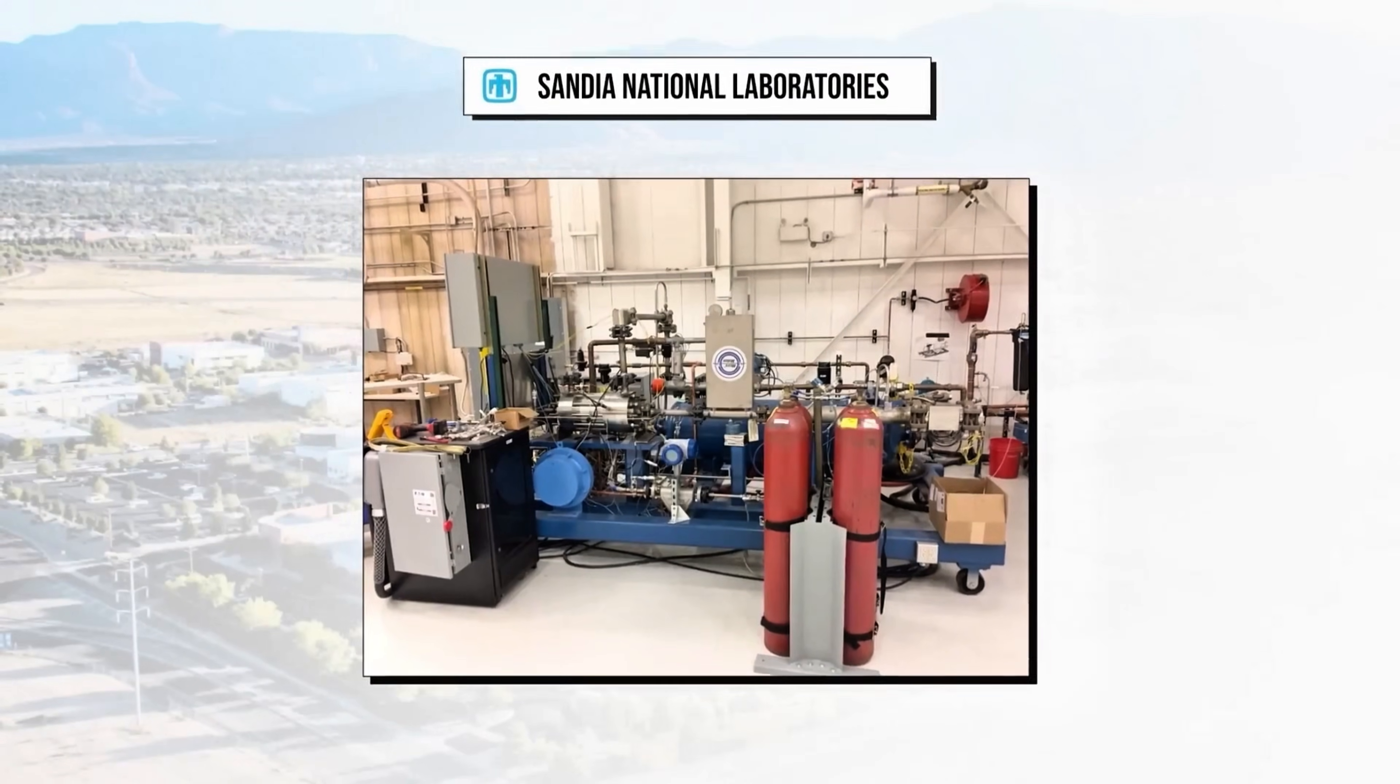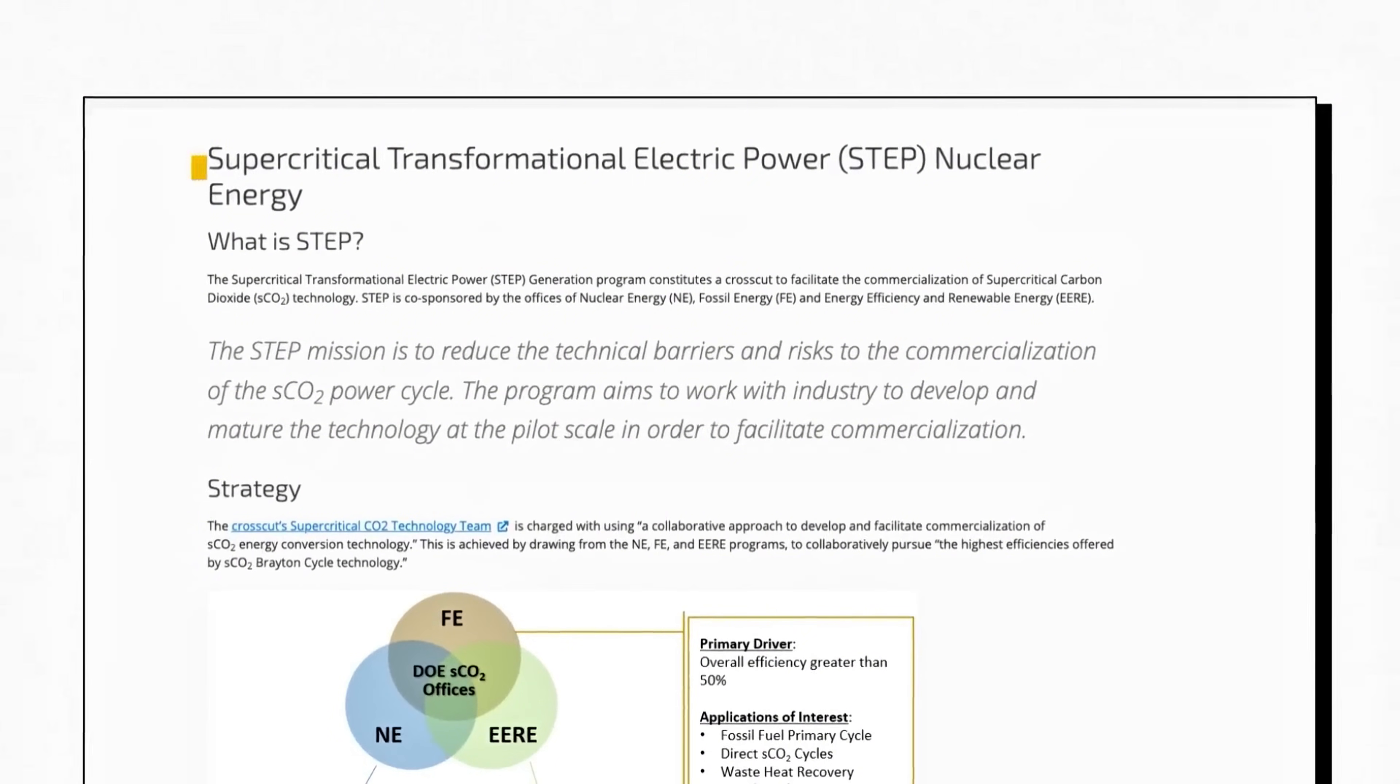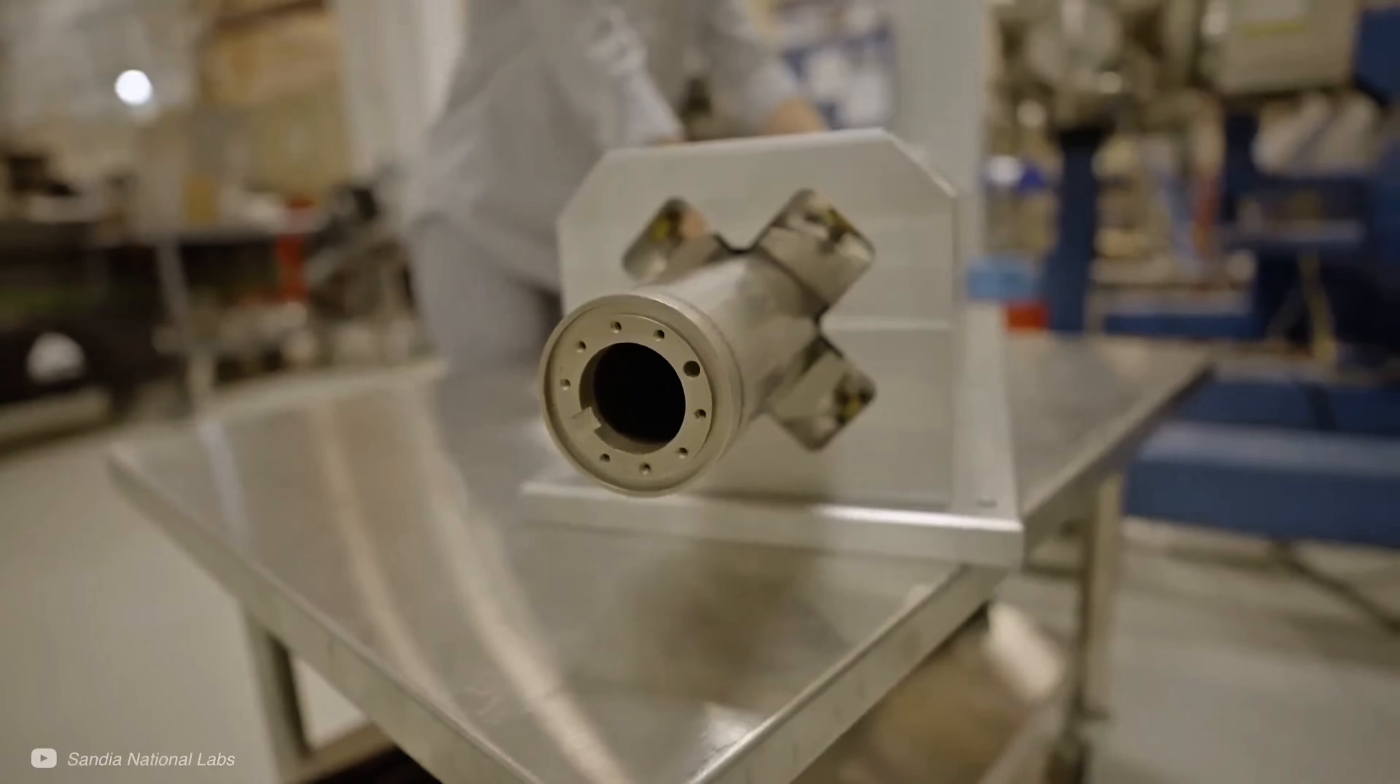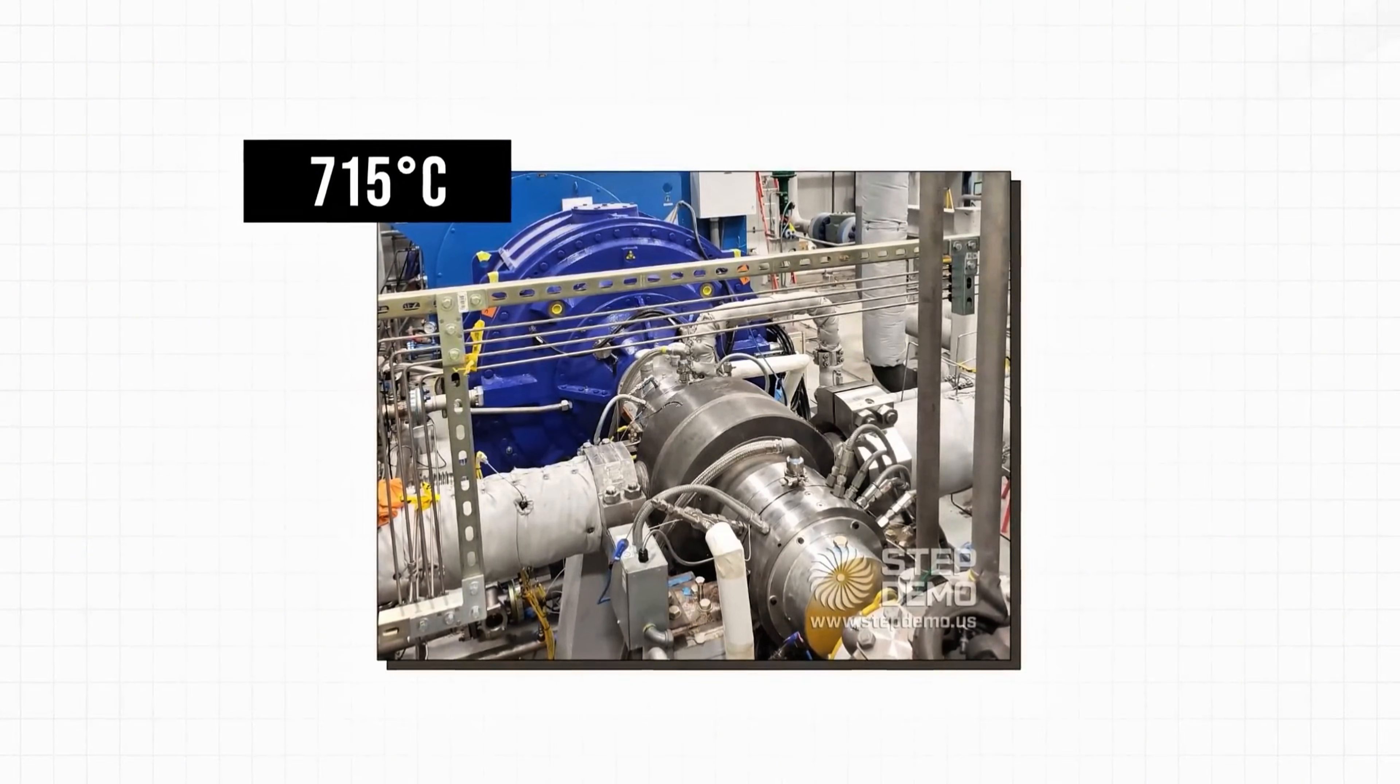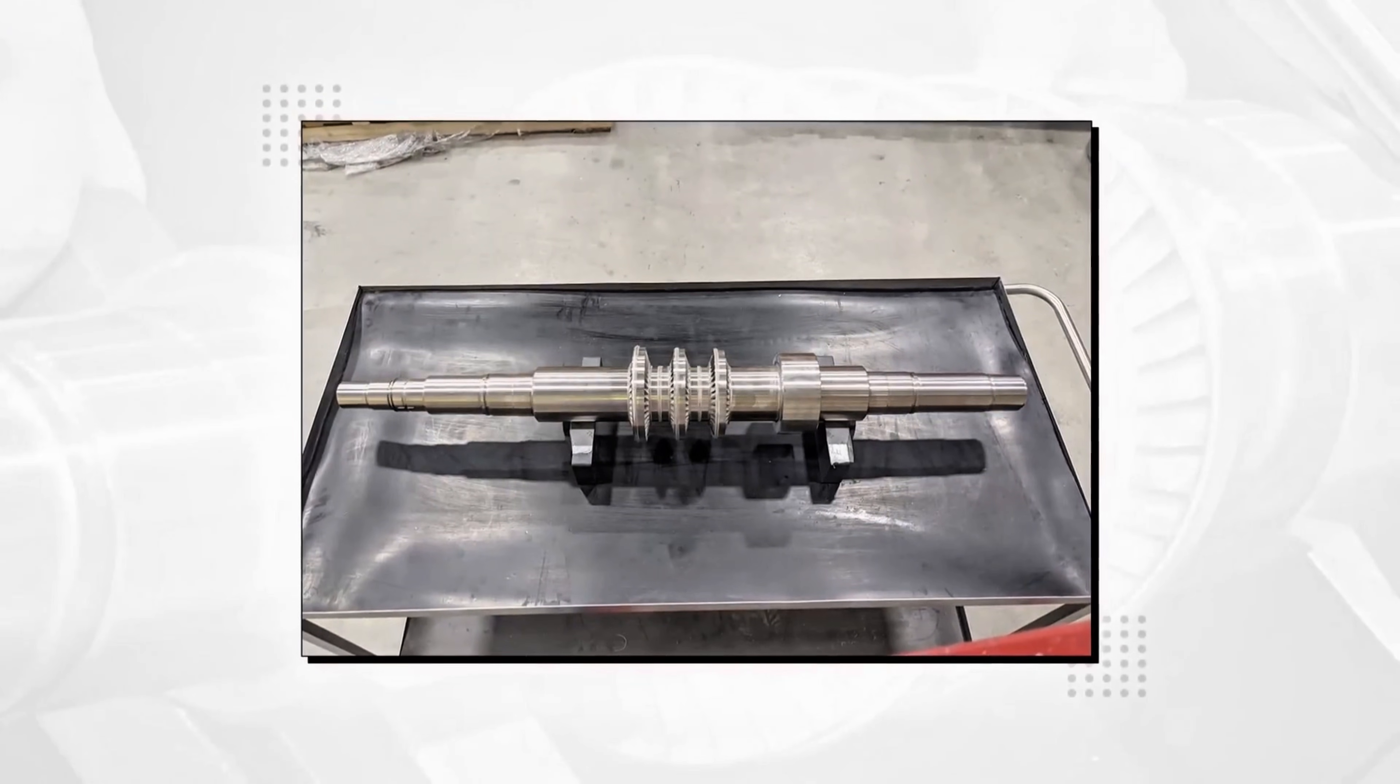But the story doesn't end when the CO2 exits the turbine. Instead of dumping its remaining heat to the environment, the hot exhaust passes through a recuperator, a special heat exchanger. There, it transfers most of its leftover heat back into the incoming compressed CO2. In effect, the turbine exhaust heats the cold CO2 before it goes back to the main heater. This clever recycling step dramatically boosts efficiency because it means we need far less extra fuel to reheat the CO2 every cycle. After giving up its heat to the recuperator, the CO2 cools a bit in a cooler, often air or water cooled, and then returns to the compressor pump, completing the loop. By capturing that exhaust heat internally, these plants lose far less energy than traditional steam systems.